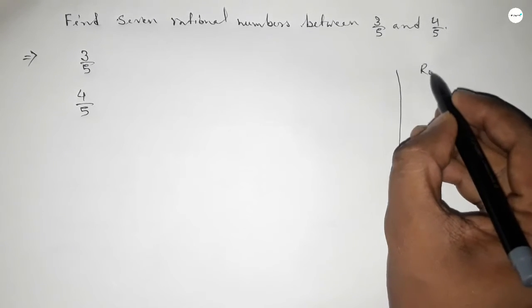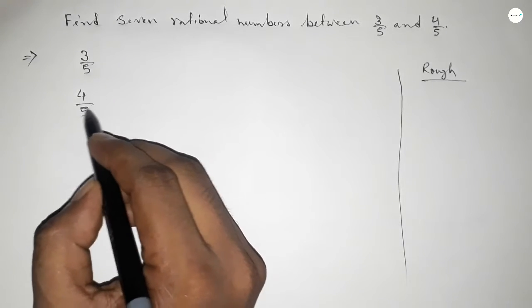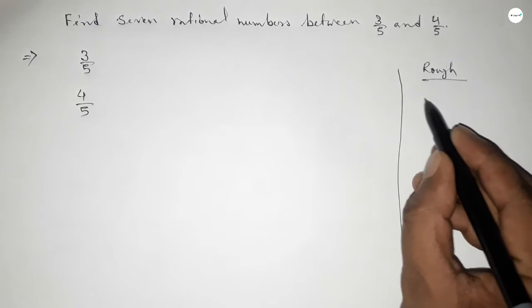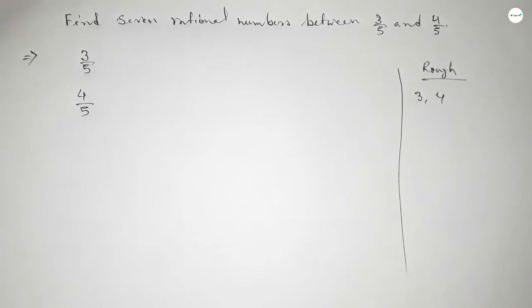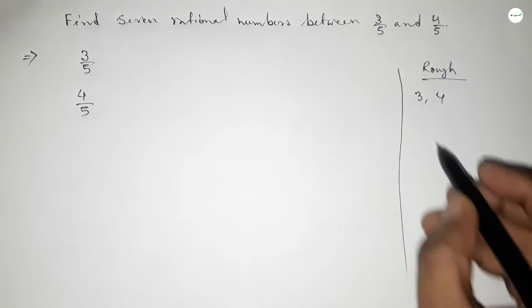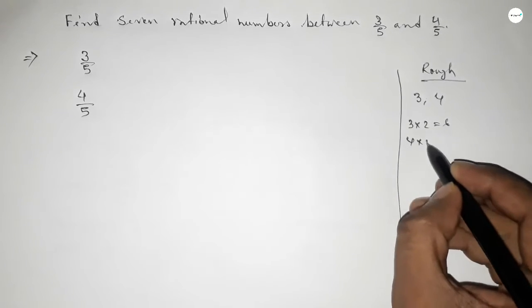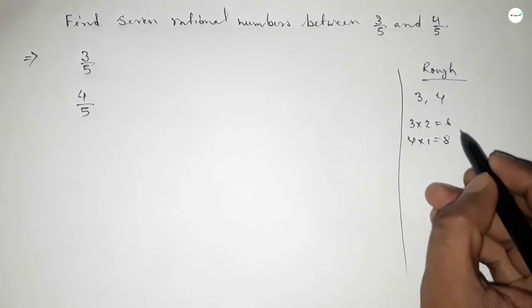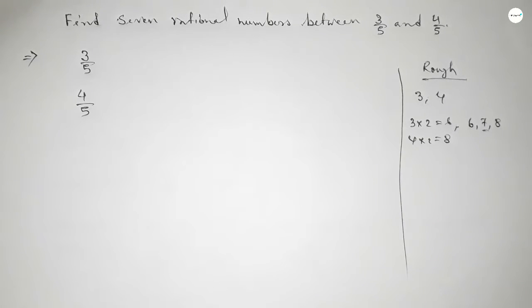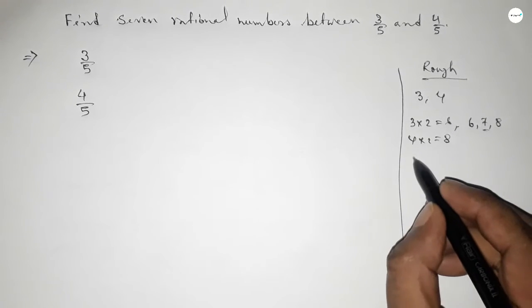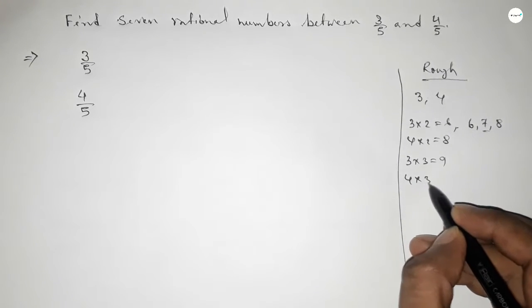The denominator of both fractions is the same, so we have to find 7 numbers between 3 and 4 in natural form. If you multiply 3 by 2 and 4 by 2, then between 6 and 8 we can get only one natural number, but we need 7 rational numbers.